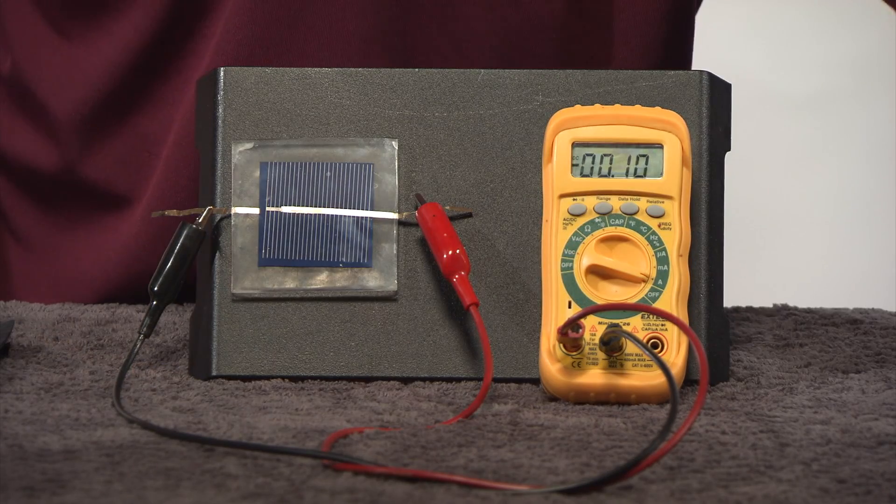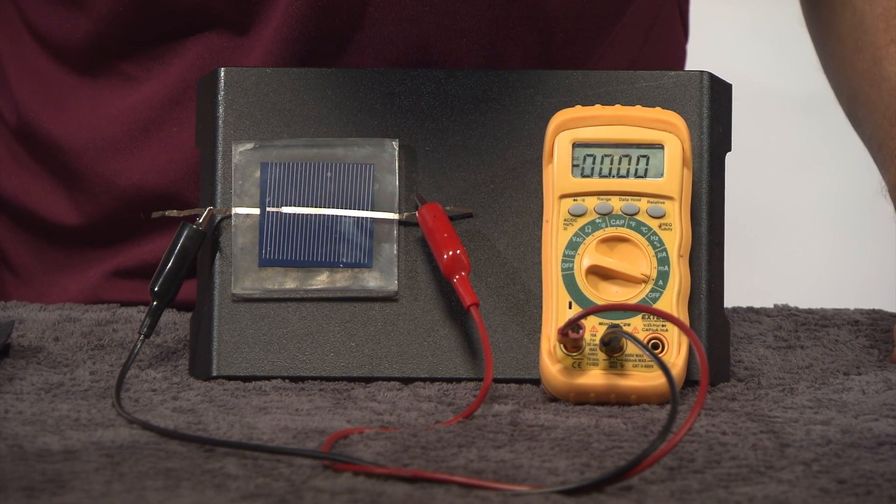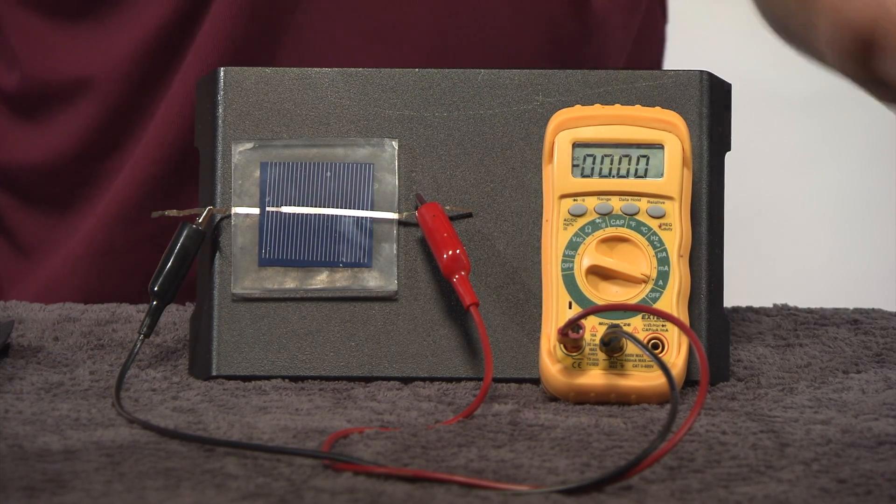Now, if we turn off the light, the output of the cell drops to zero and we no longer read any current. We know from our last demo that light generates mobile charges in silicon, but how do these mobile charges become electric current coming out of our solar cell? The secret has to do with doping.